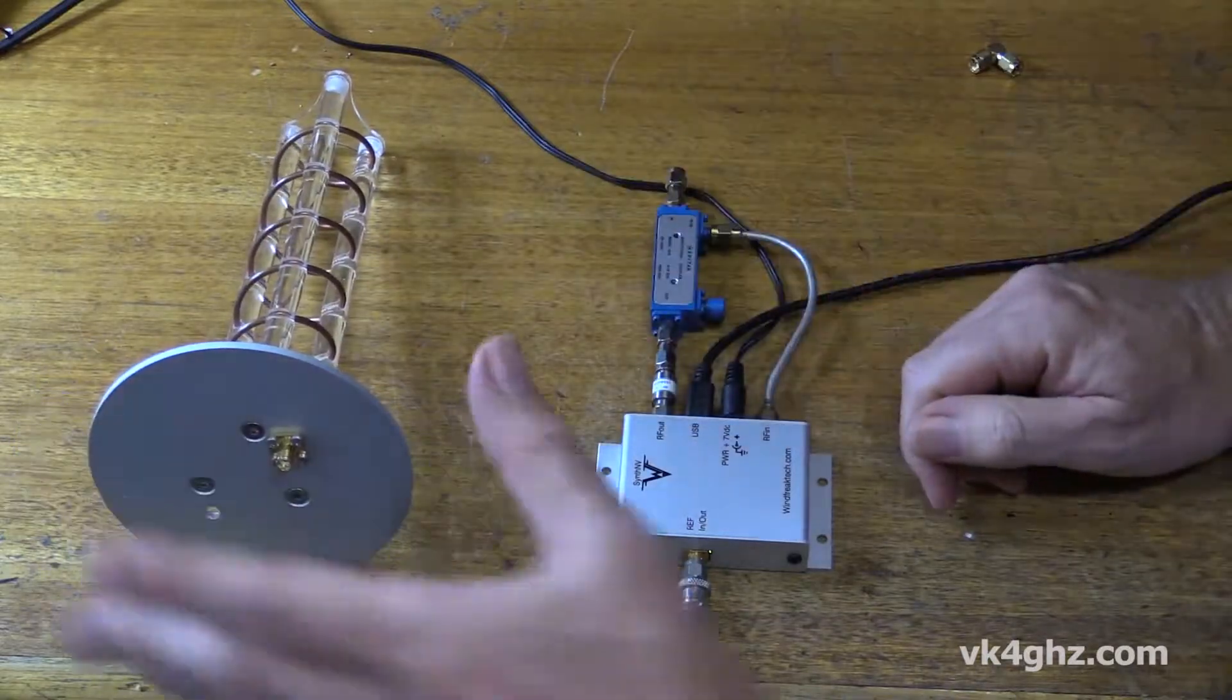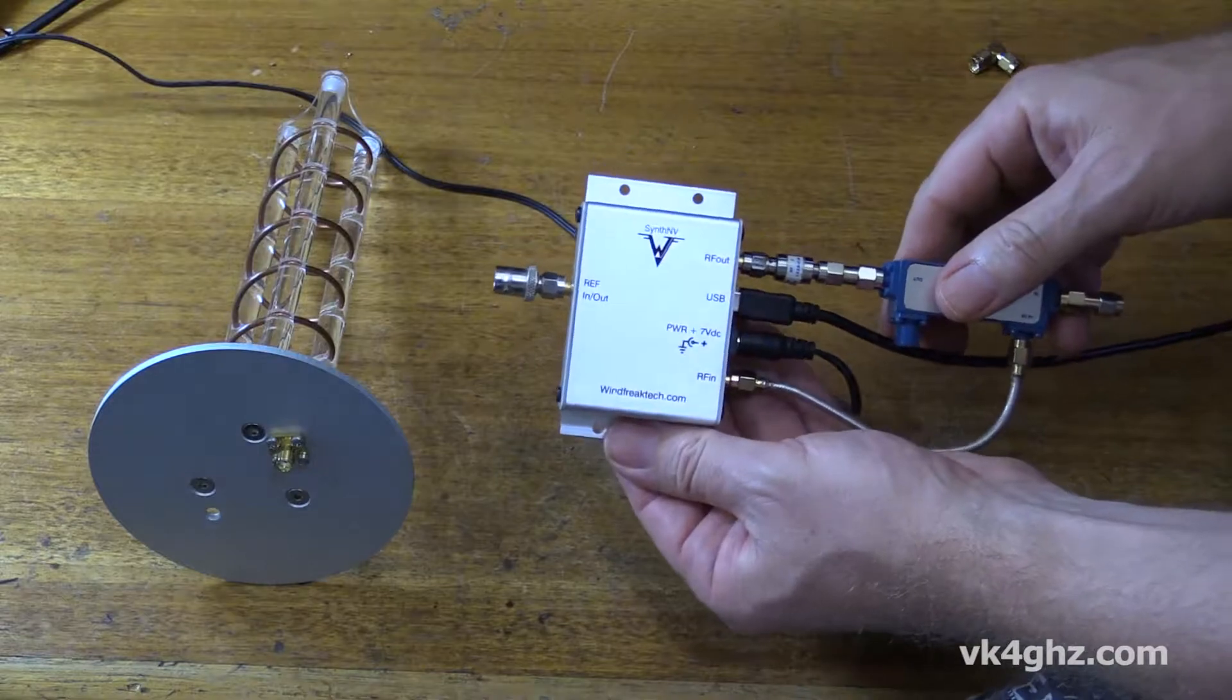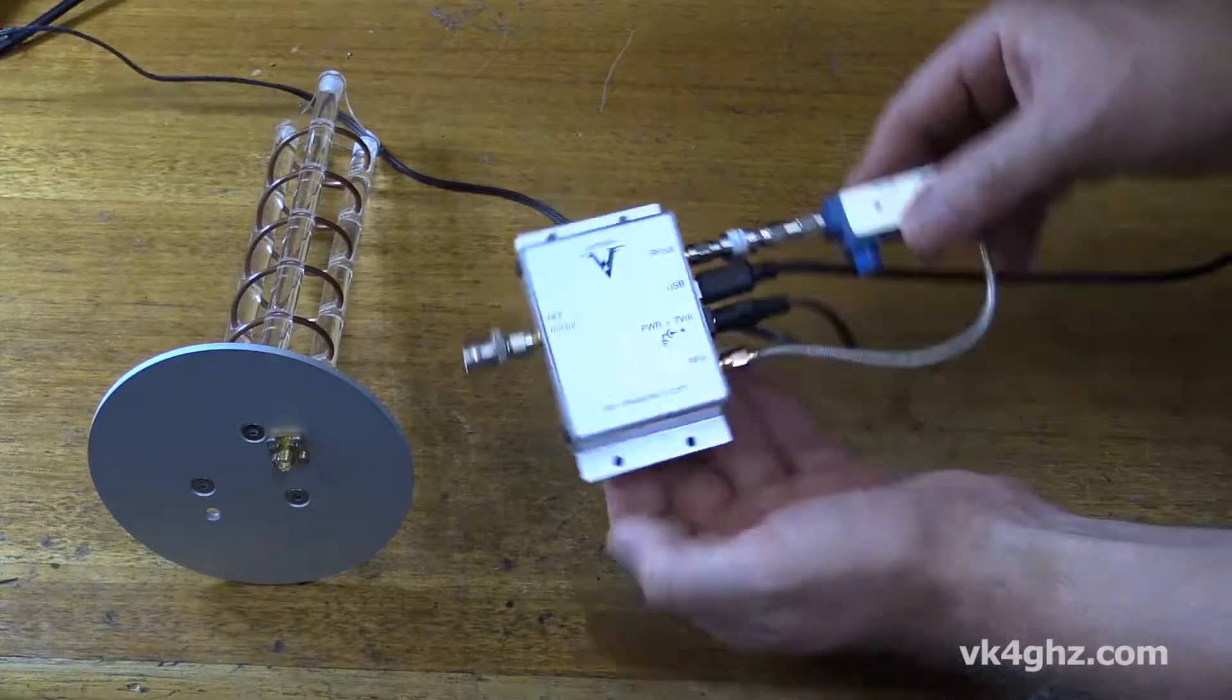Now to do that, I'm going to use the ever trusty Winfreak SynthMV. These are a great little device for the workshop bench. It's a combined signal generator and RF power detector and it works up to 4.4 gigahertz.